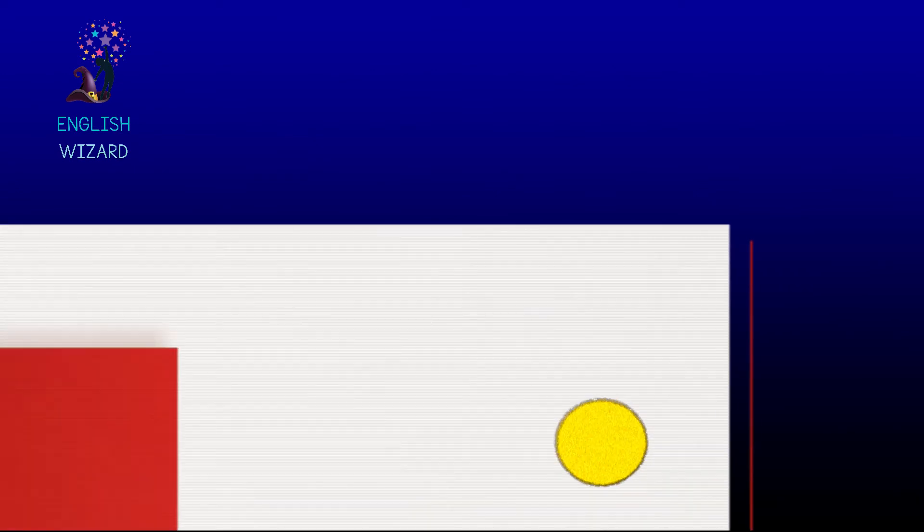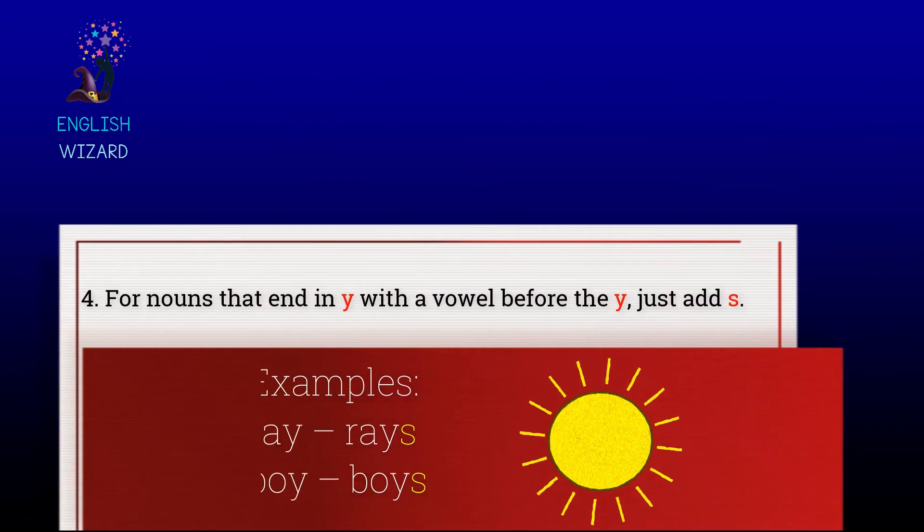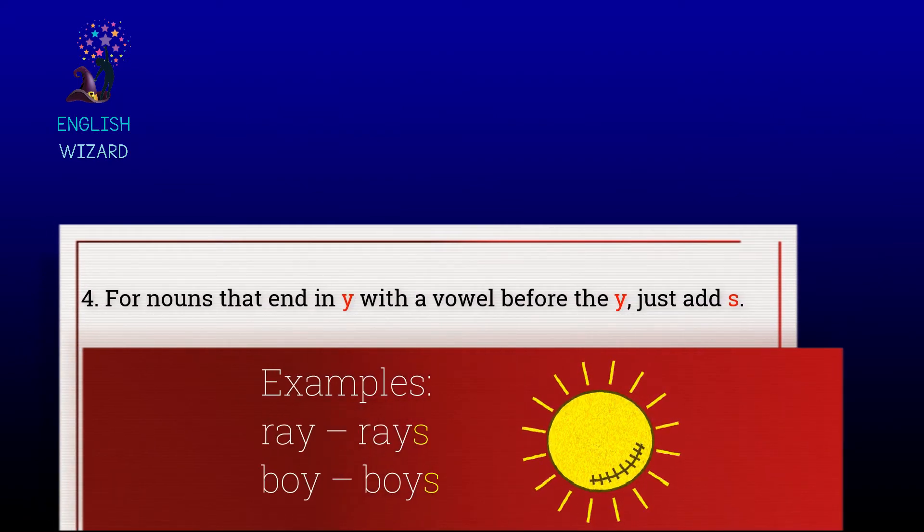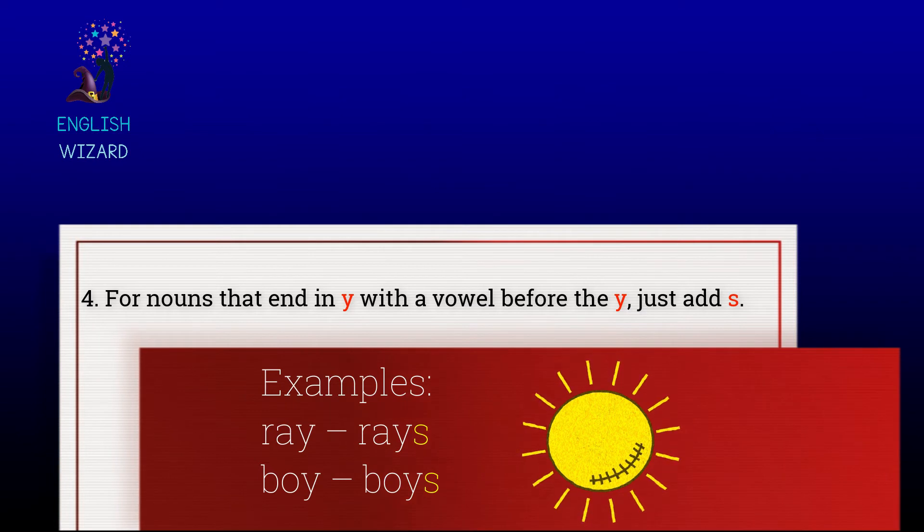For nouns that end in -y with a vowel before the -y, just add -s. Examples.